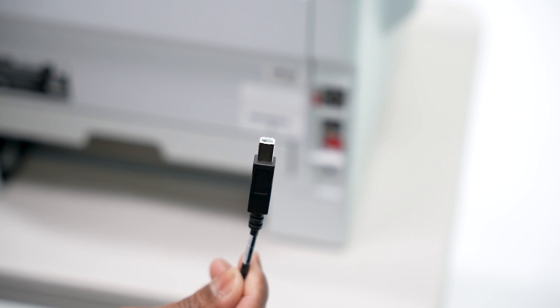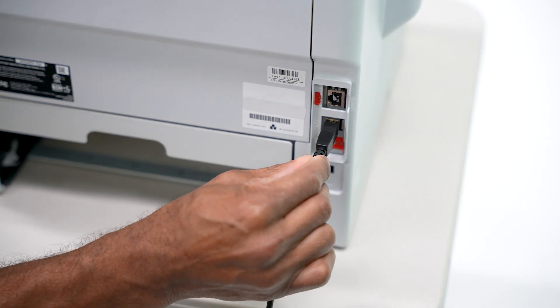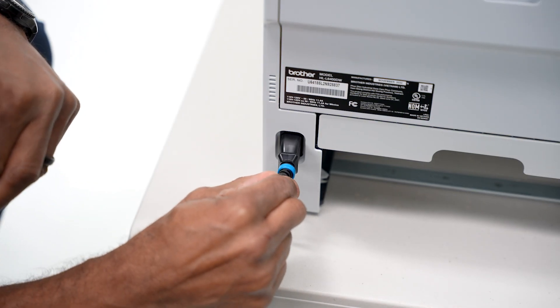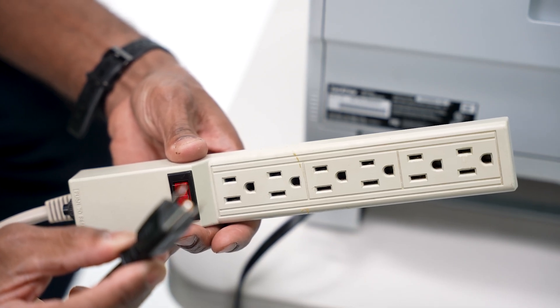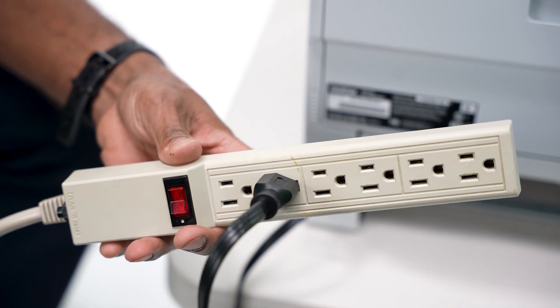Plug the smaller square silver end of the USB printer cable into the back of the printer. Plug the printer power cord into the back of the printer. Plug the other end into an outlet or power strip but do not power on the printer at this time.